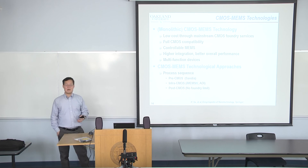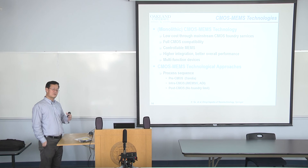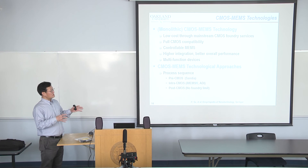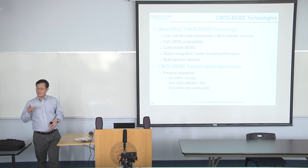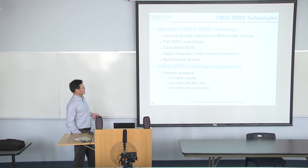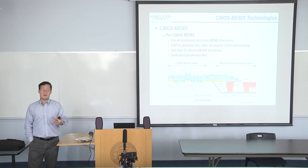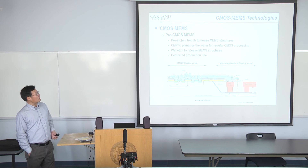Monolithic integration uses pure CMOS — we can get fabrication from IBM, TSMC in Taiwan, Samsung — all providing fabrication services. After CMOS fabrication is done, we create our sensors on the same wafer. This differs from 3D packaging. Based on the sequence — CMOS first or MEMS first — there are different approaches in different communities.